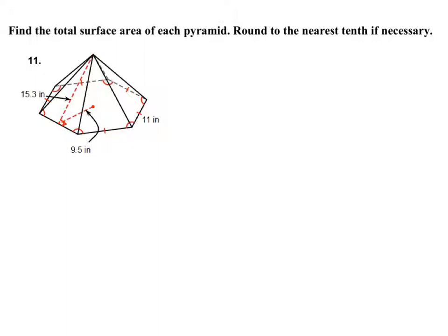We want to find the total surface area of this pyramid, rounded to the nearest tenth if necessary. On this particular pyramid we have a hexagonal base, so it's a two dimensional shape with six sides, right? A hexagon.